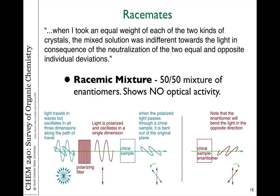It makes sense that if enantiomers only rotate light in opposite directions, then a 50-50 mixture of mirror image isomers would show no optical activity — no rotation of light. Because if you have equal amounts of both enantiomers, as the light passes through, they cancel each other out. One molecule rotates the light a little to the left, then it hits the mirror image isomer and rotates it the same amount to the right, so the net rotation is zero. This is what we refer to as a racemic mixture — a 50-50 mixture of enantiomers in which no optical activity is observed.